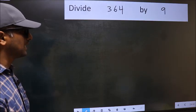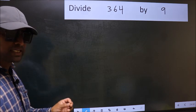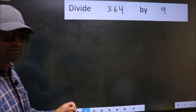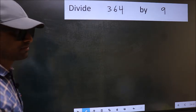Divide 364 by 9. While doing this division, many do this mistake. What is the mistake that they do? I will let you know. But before that, we should frame it in this way.